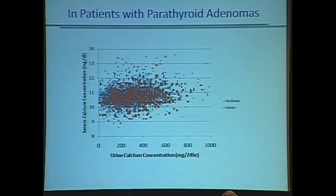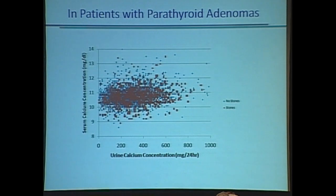You heard it here first. Some of you already know this because you've figured it out yourself by practicing. Now look at the data — there are blue squares and red squares here. Blue squares mean no stones; red squares mean people have stones. Let's look at that a little bit closer.